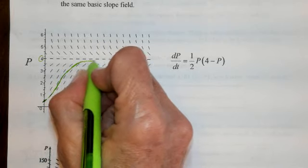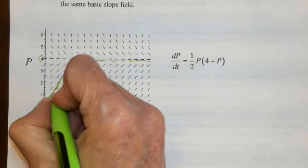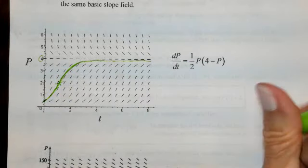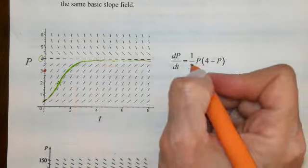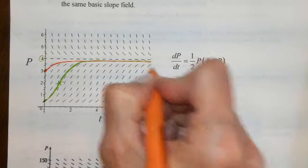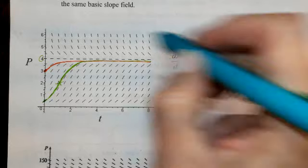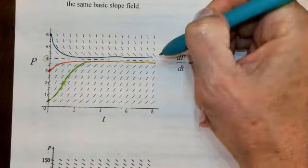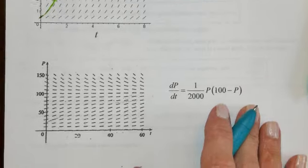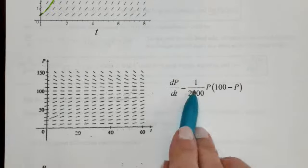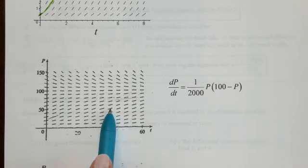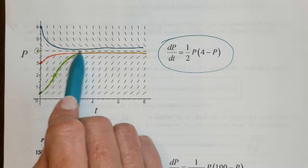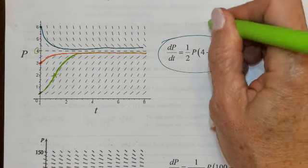The curve will never cross that limiting line — you can see the point of inflection right there. If the curve starts up here, you get a different solution curve. That was one example of a logistic differential equation. Here's another one — notice the limiting value is also four; you can see it right in the equation.